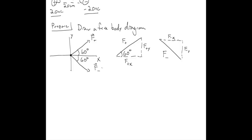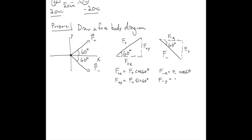Let's figure out what those components are. Dusting off our trig: F+X is F+ cosine of 60 degrees, and F+Y is F+ sine of 60 degrees. Similarly, F-X is F- cosine of 60 degrees, and F-Y is F- sine of 60 degrees.